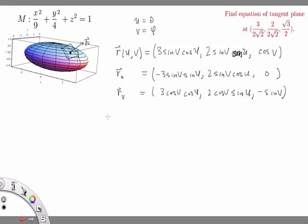If I take R sub U cross R sub V, I'll get a normal vector to the surface. Why is that? Well, R_U and R_V are tangent vectors to the surface, and because the cross product of two vectors is perpendicular to both vectors simultaneously, it must be perpendicular to the surface. So N of U, V — the normal vector at the point R of U, V — is given by R sub U cross R sub V.